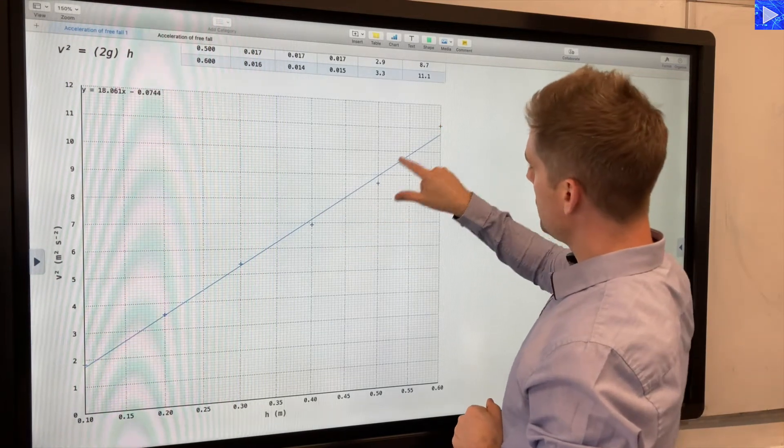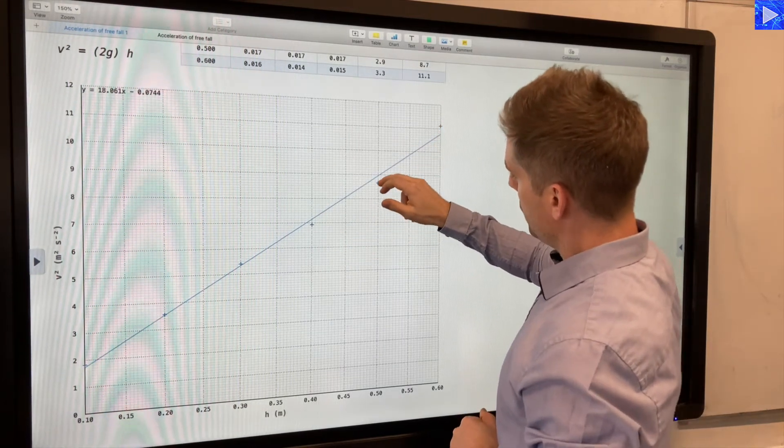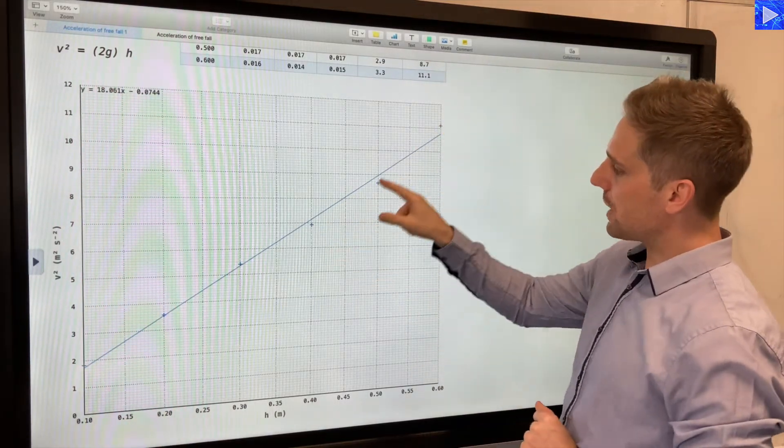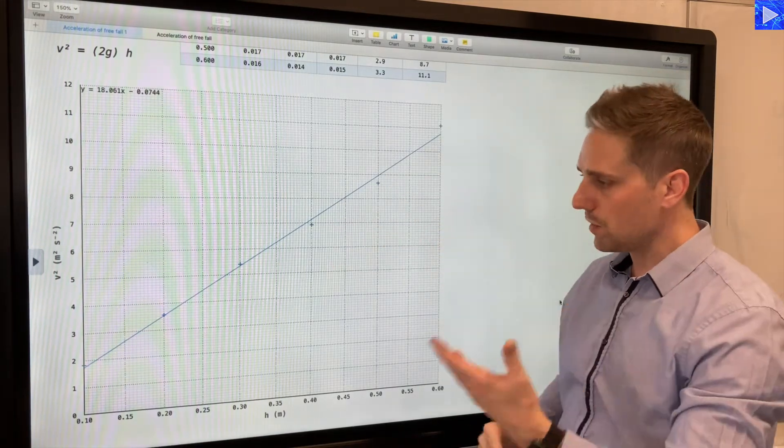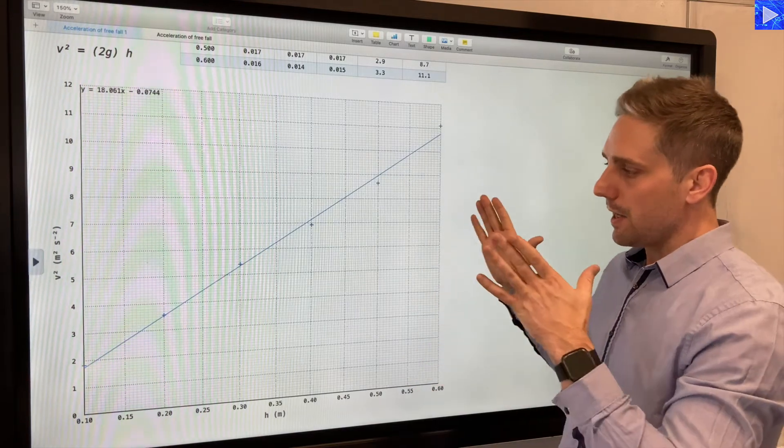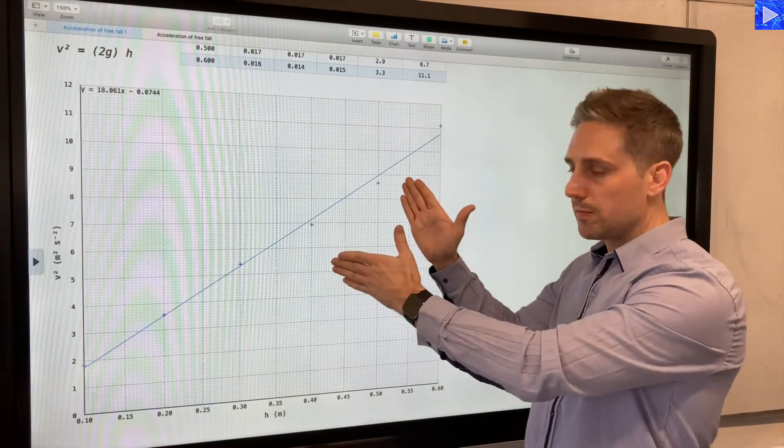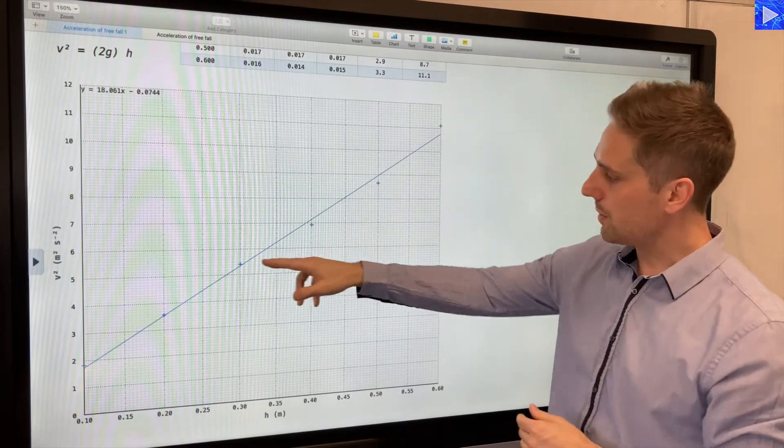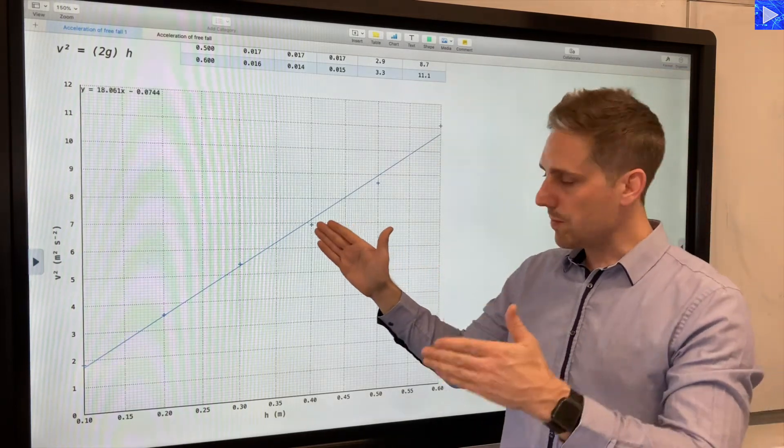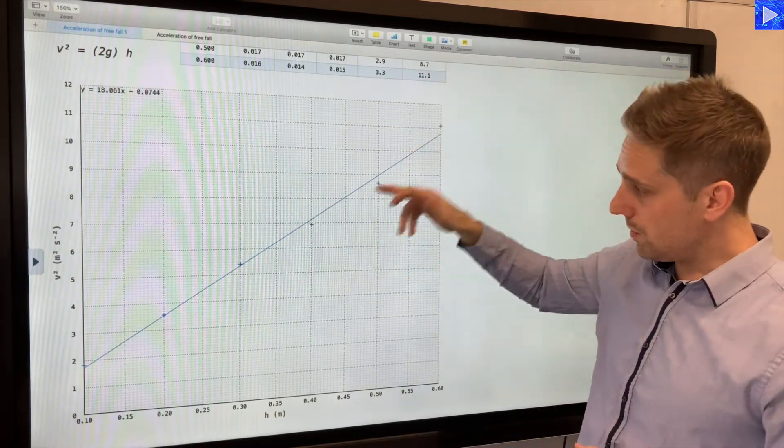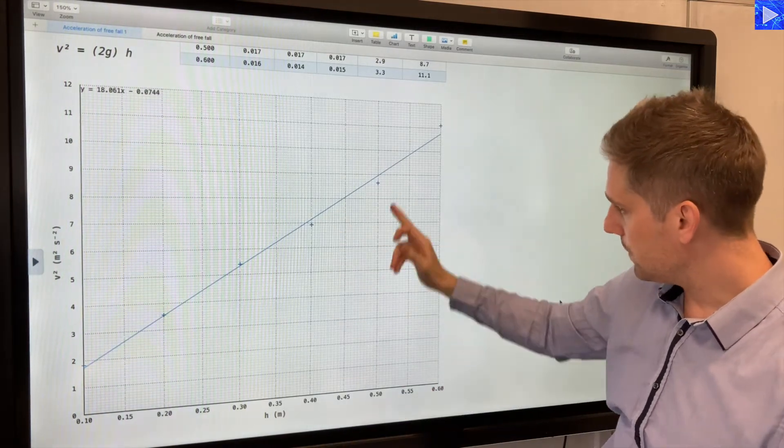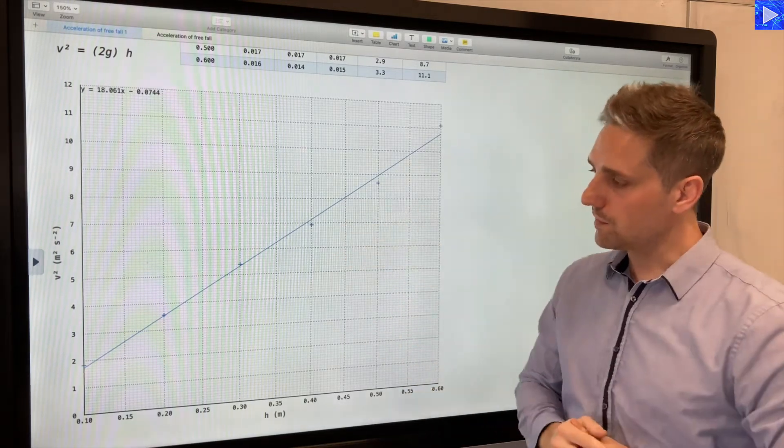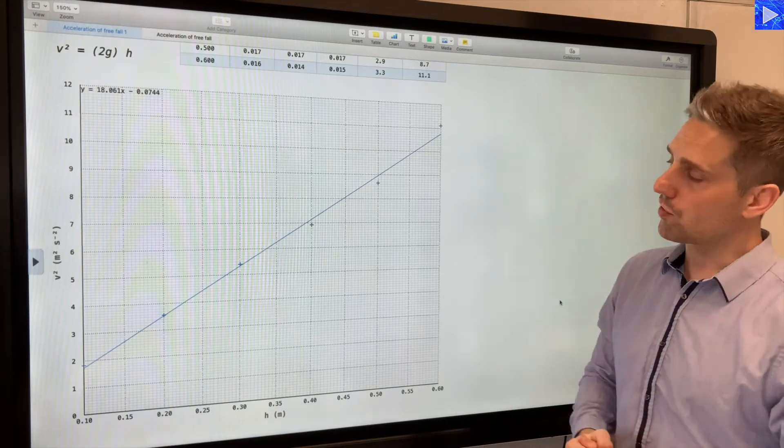But you can see these two points in particular are quite far away from the line. There's more scatter here - it would be good to go back and recheck these values for consistency. It's good practice whenever you do an experiment to keep the equipment set out until you've plotted your data plots. Then you can see if some points aren't following the trend very well. It's a good idea to go back and check, do another repeat of these ones. That was 40 centimeters and 50 centimeters, just to see if upon doing them again, you get data that's a bit more consistent.